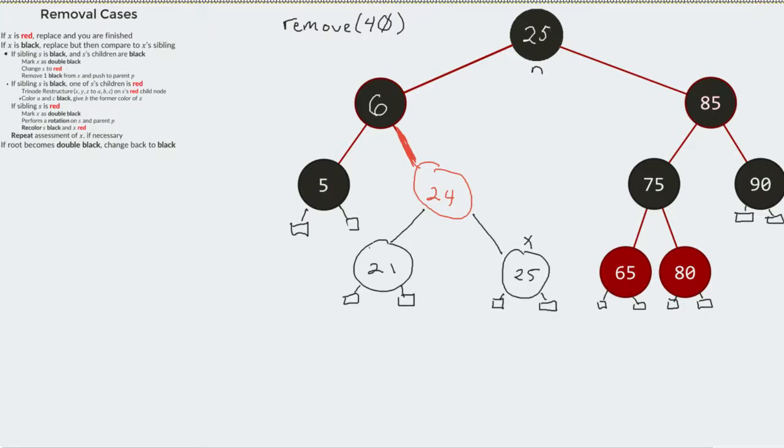However, we run into a slight problem because once again, since my X is a black node, we have to look at my sibling. And in this case, you notice that my sibling has two black children. Two black children. And so we don't do the same thing that we did before.